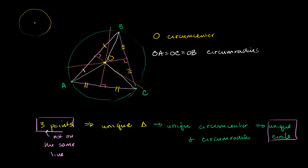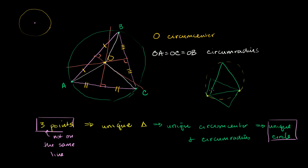Two points won't do it. If you give me two points, there's an infinite number of triangles I can construct with those two points because I can put the third point anywhere — I could construct this triangle, or this triangle, or this triangle. All of these triangles are going to have different circumcenters and different radii, so they're going to have different circles that circumscribe about those triangles. So you see very clearly that two points are not enough — you need three points.